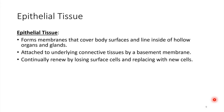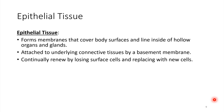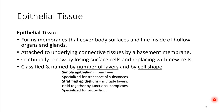Epithelial tissue comes in a lot of different varieties. We can classify this type of tissue based on how many layers of cells there are and what the shape of the cells is — those are the two primary things. If there's a single layer of cells, we call it simple epithelium. If there are multiple layers stacked on top of each other, that's called stratified epithelium.